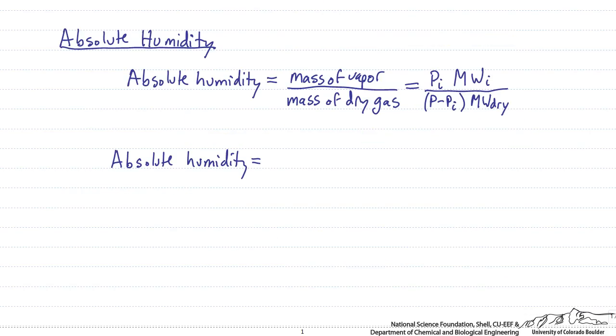So if we plug in our numbers to this equation, we remember from above that our partial pressure of the water in the system is 28.854 millimeters of mercury. The molecular weight of water is 18 grams of water per mole. The atmospheric pressure of the system, the total pressure, is 760 millimeters of mercury.